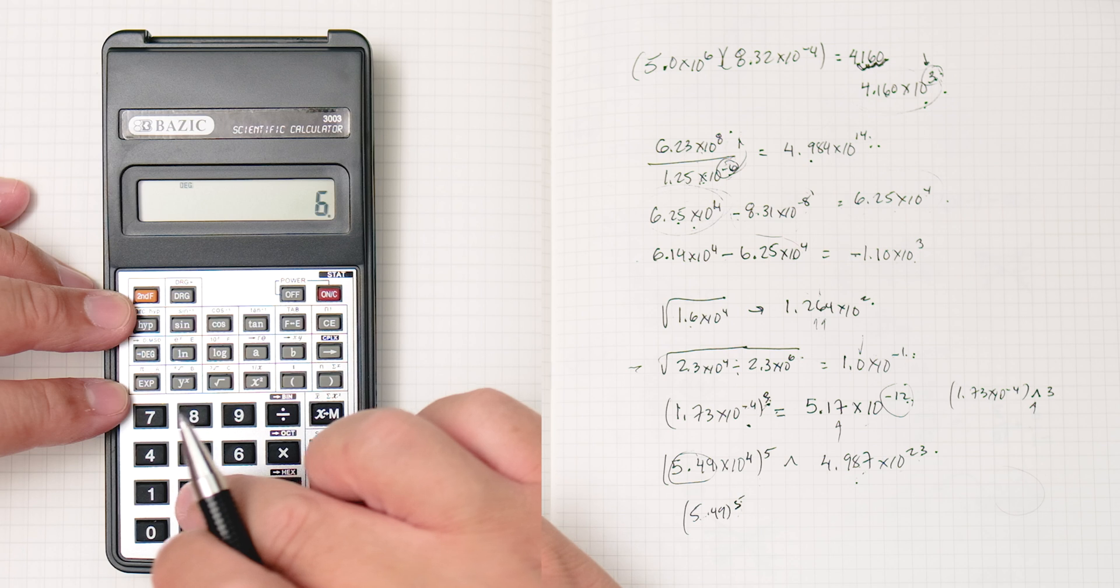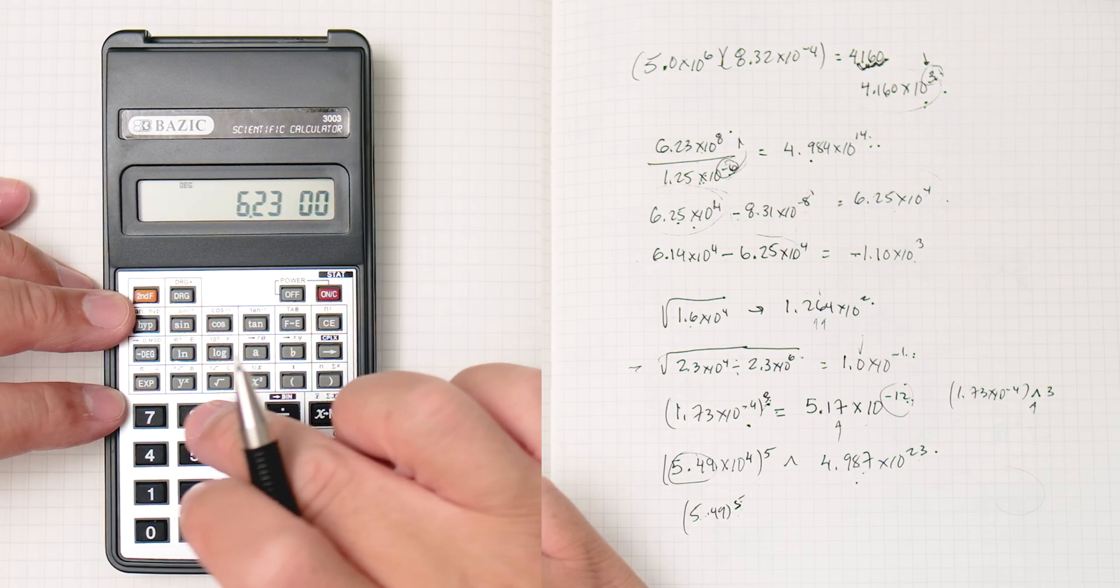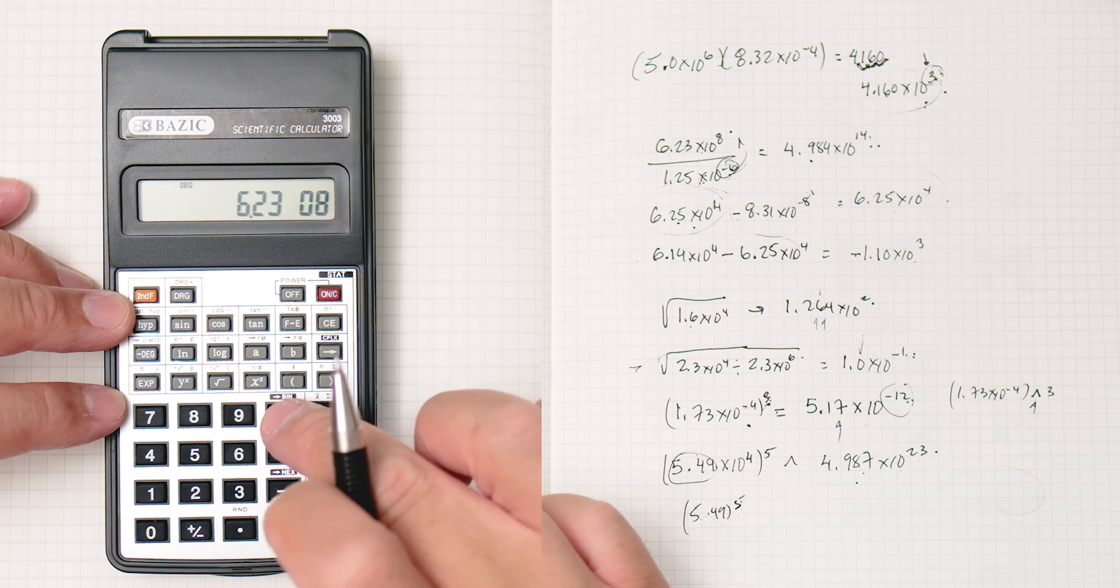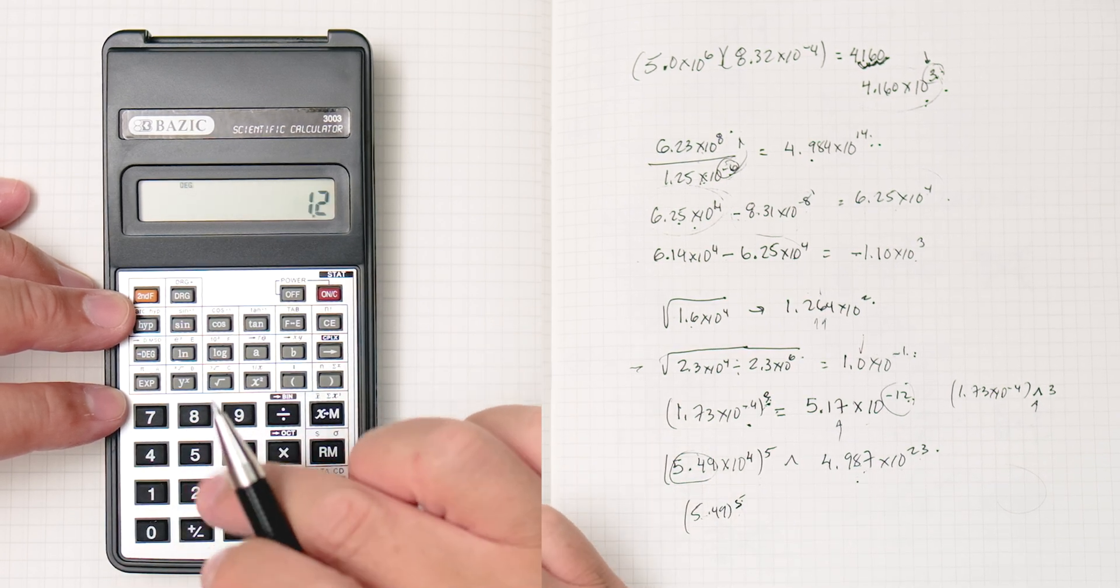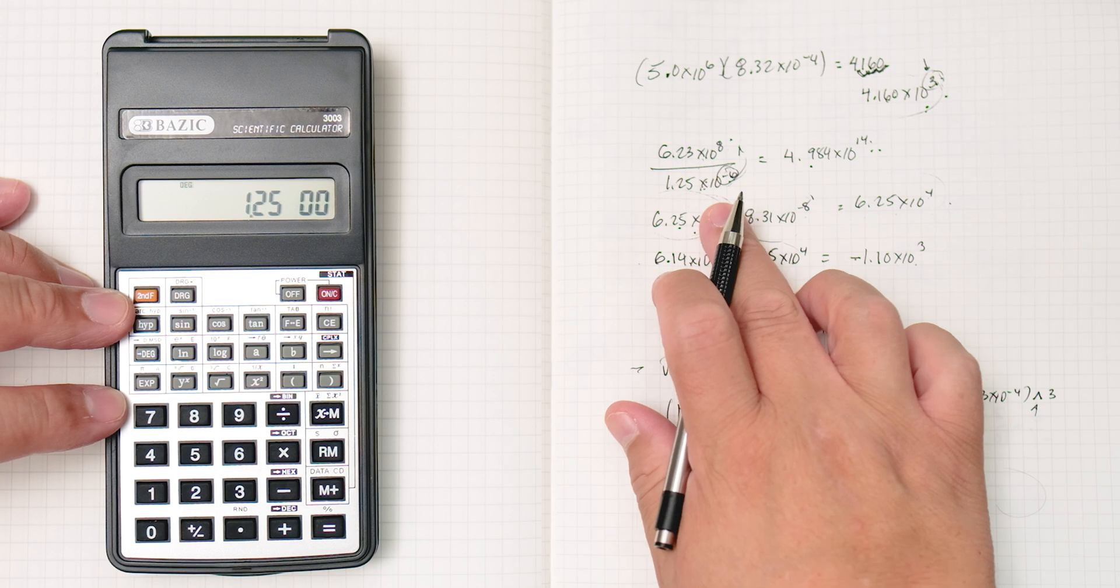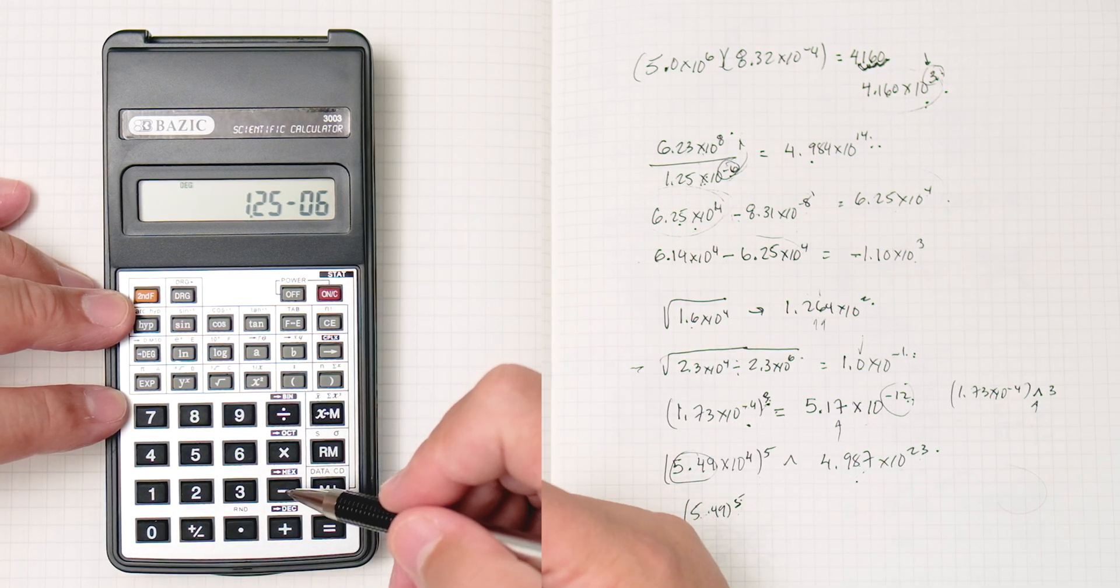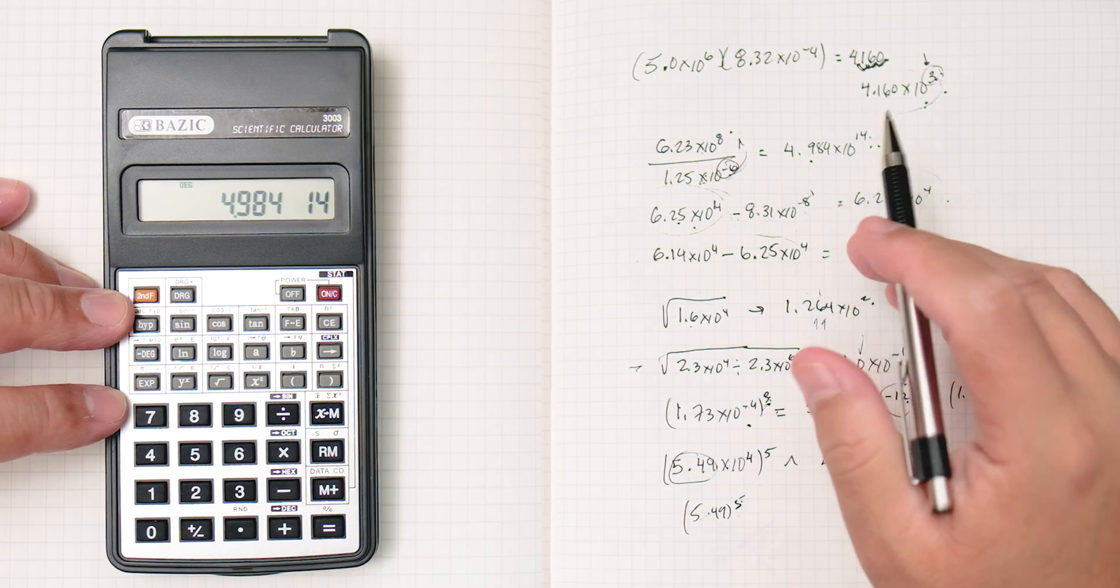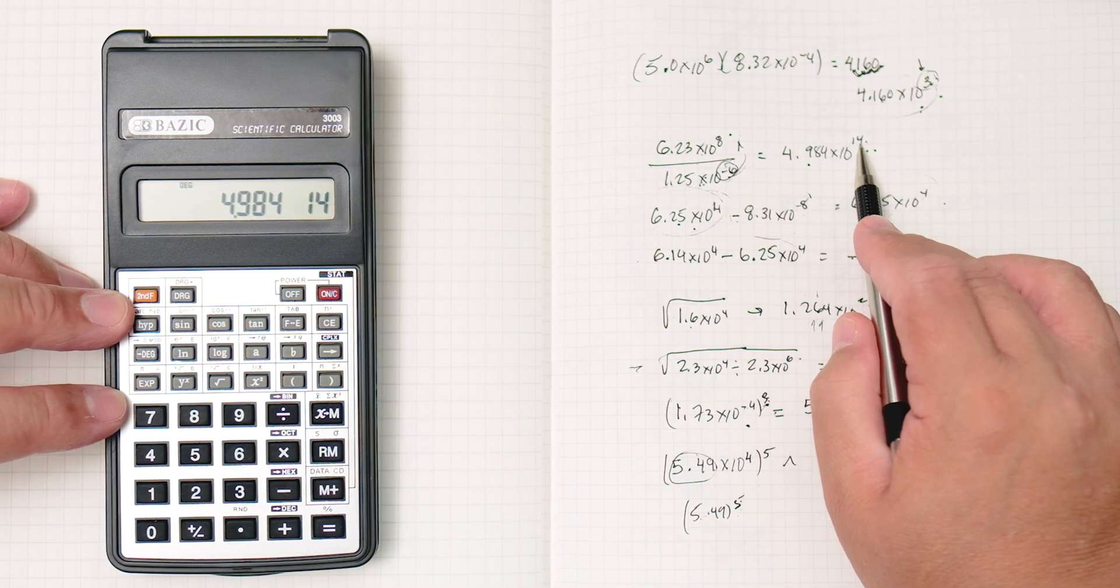6.23 to the power of 8 divided by, divided by 1.25 to the power of negative 6, not subtraction, right? We're doing this problem, equals, 4.984 times 10 to the 14th.